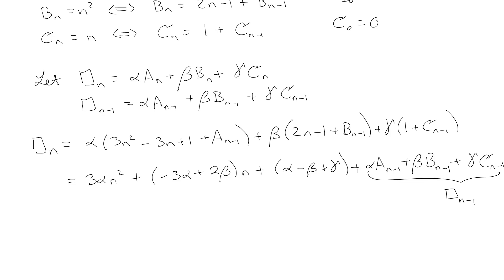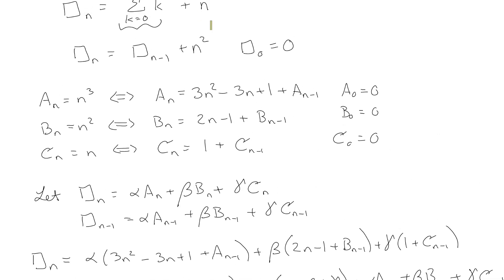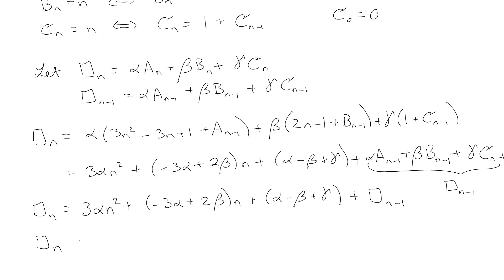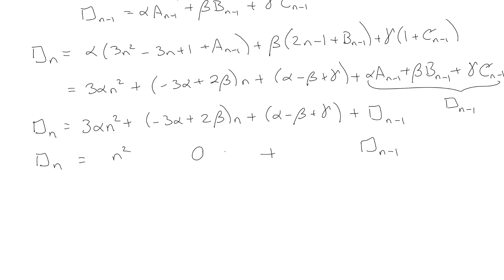This here we recognize is going to be the n minus one term, so that's the recursive term. If we come back here and look, we see that the recursive function should be plus n squared. Our goal is to make this equal to n squared plus this n minus one. Basically there's a zero in front of the n and there's a zero for the constant term. So 3 alpha is going to be 1, negative 3 alpha plus 2 beta is going to be 0 so beta is 1/2, and alpha minus beta plus gamma is also going to equal 0, so gamma is going to be equal to 1/6.